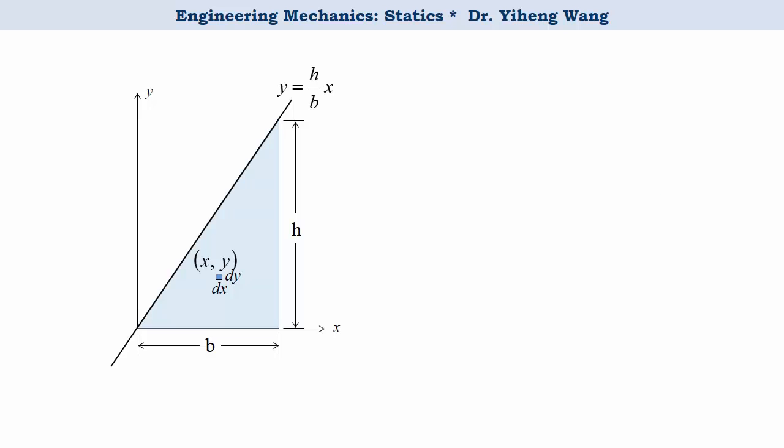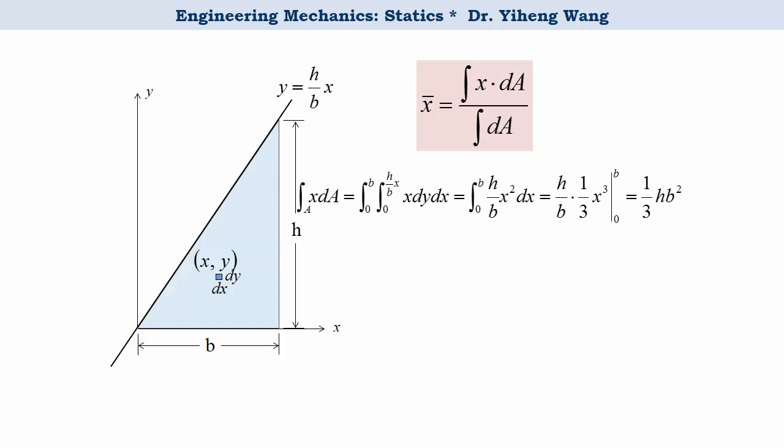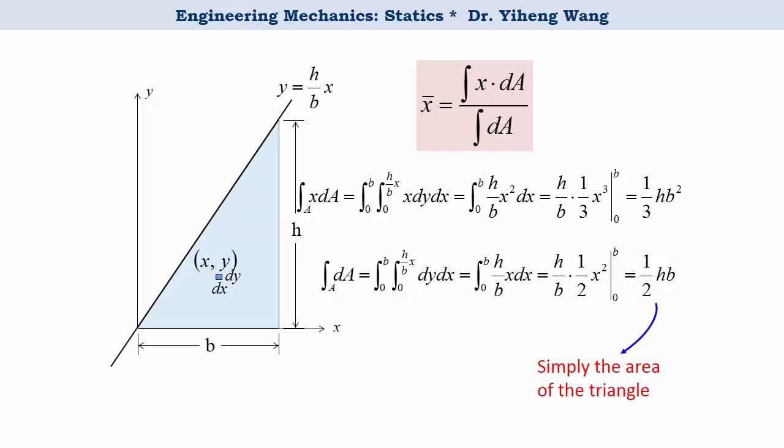Therefore first we calculate for x bar. The numerator is an integration of x times dA integrated along the y axis from 0 to the line h over bx and along the x axis from 0 to b. And we get one third hb squared. And we do the same thing with the denominator, which is one half h times b. You might notice this is simply the area of the triangle, one half height times the base. That is correct. The denominator in this formula is simply the total area. Therefore x bar is calculated to be two thirds times b.